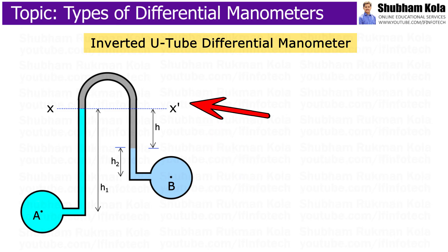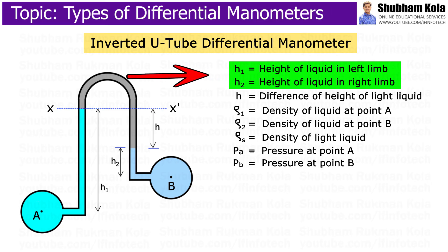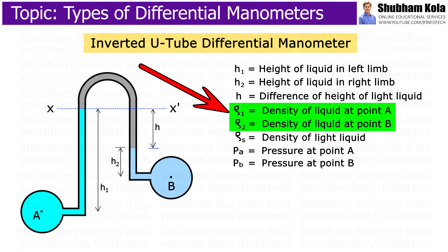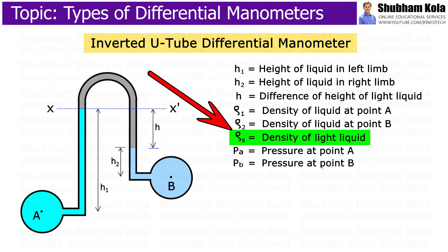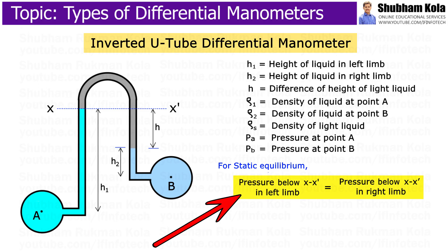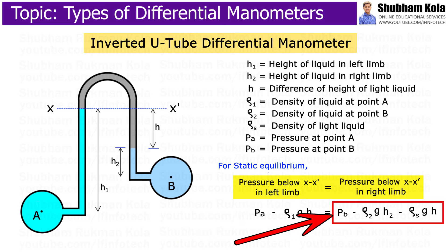In the next type, the inverted U-tube differential manometer is connected to two points A and B, where pressure at A is more than pressure at B. Here, H1 and H2 are the heights of liquids in the left limb and right limb below the datum line xx. h is the difference of height of the light liquid. Rho 1 and Rho 2 are the densities of liquids at points A and B respectively, and Rho s is the density of the light liquid. PA and PB represent the pressures at points A and B. By static equilibrium, PA minus Rho 1 times g times H1 equals PB minus Rho 2 times g times H2 minus Rho s times g times h.